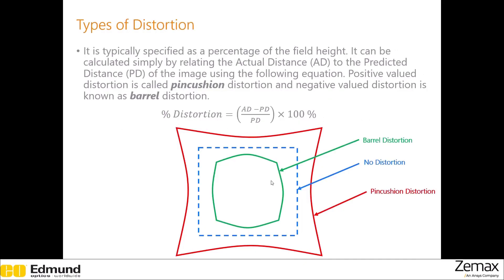You can quantify this distortion by calculating how much the difference is between the actual and predicted distances. This value is usually given as a percentage of the field height.